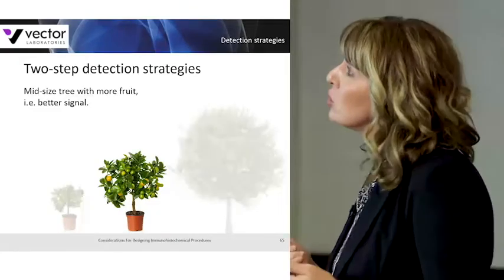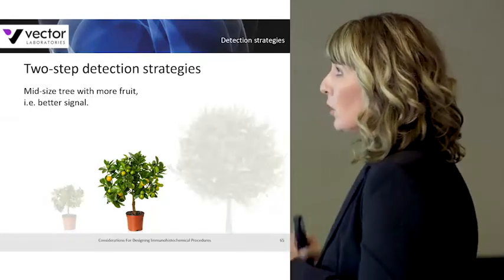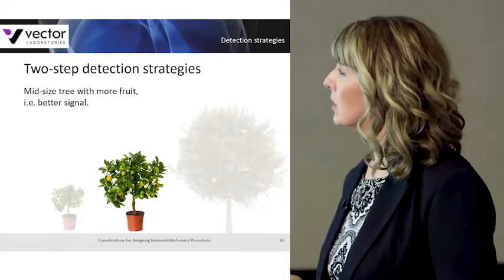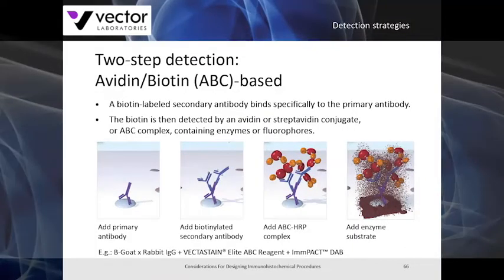The next type are two-step detection strategies — a mid-sized tree with slightly more branches allowing more fruit, which leads to better signal. The first two-step detection is an avidin-biotin-based system. A biotin-labeled secondary antibody directed against your primary antibody is applied and binds your primary. The biotin is then detected with a streptavidin or avidin conjugate or a preformed ABC complex, followed by your substrate, which deposits the precipitate at the site of your target antigen. The additional layer allows more enzyme to be deposited, allowing for more signal.